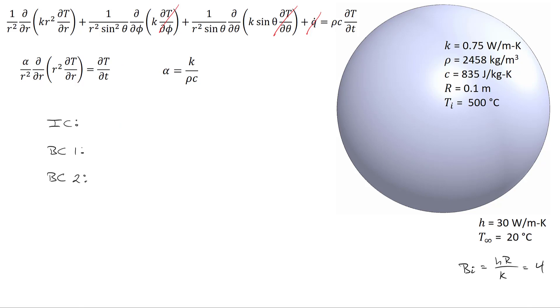To solve this equation, we're going to need one initial condition, and that's that T is equal to some initial temperature—in our case 500 degrees C at time equal to zero—and this is applicable for all R.